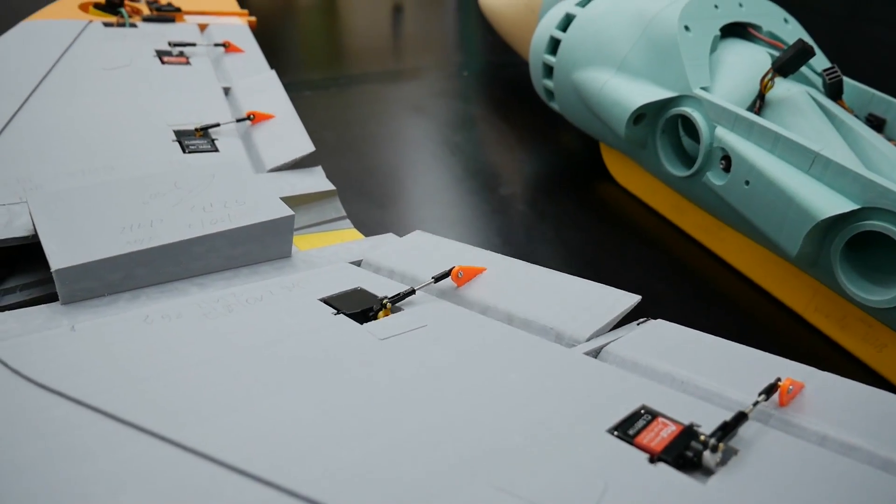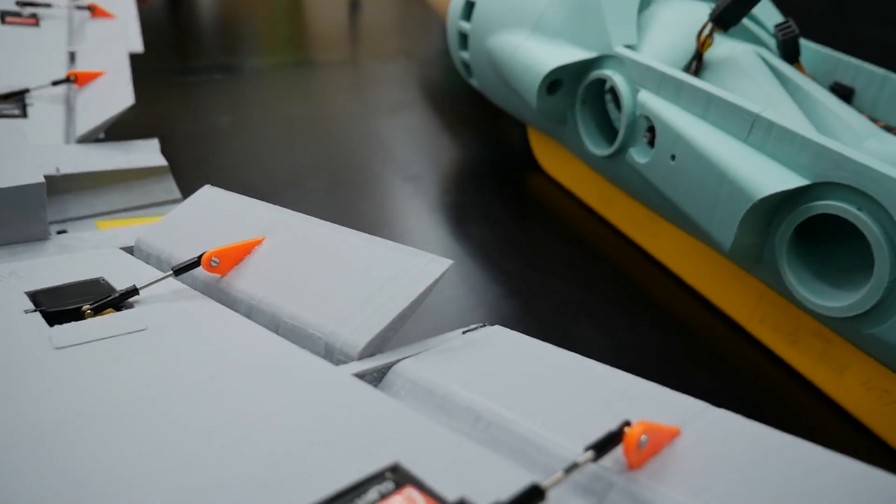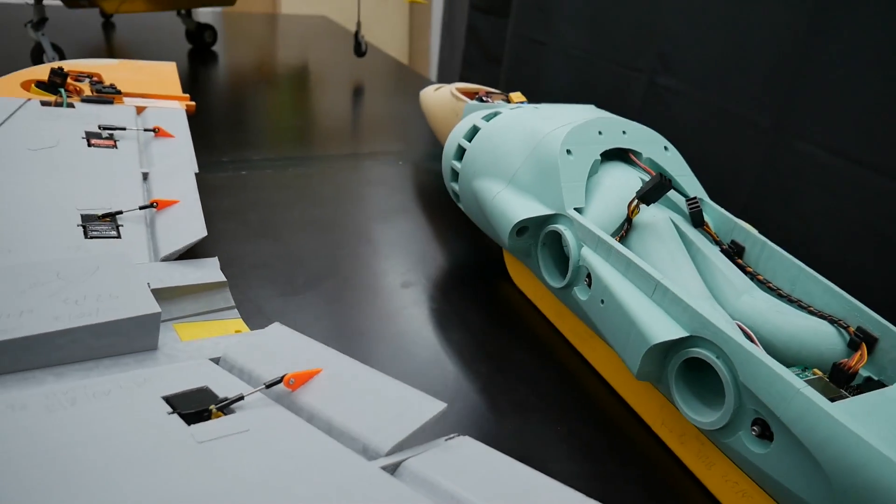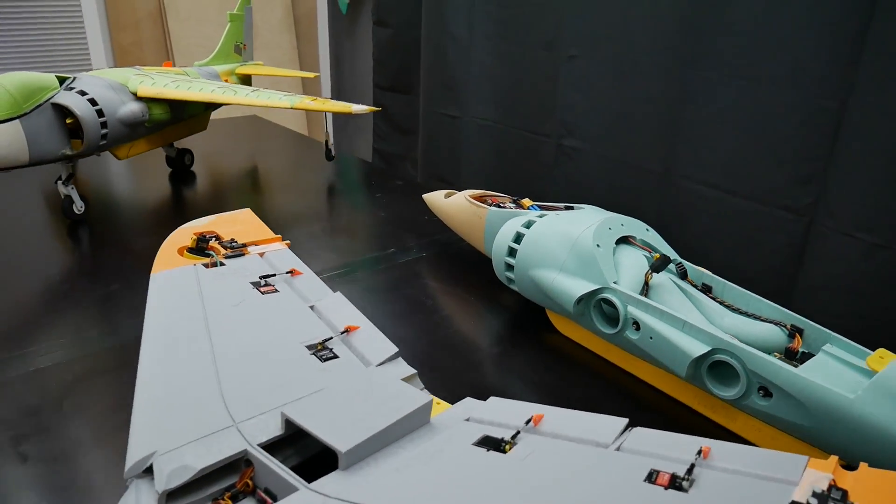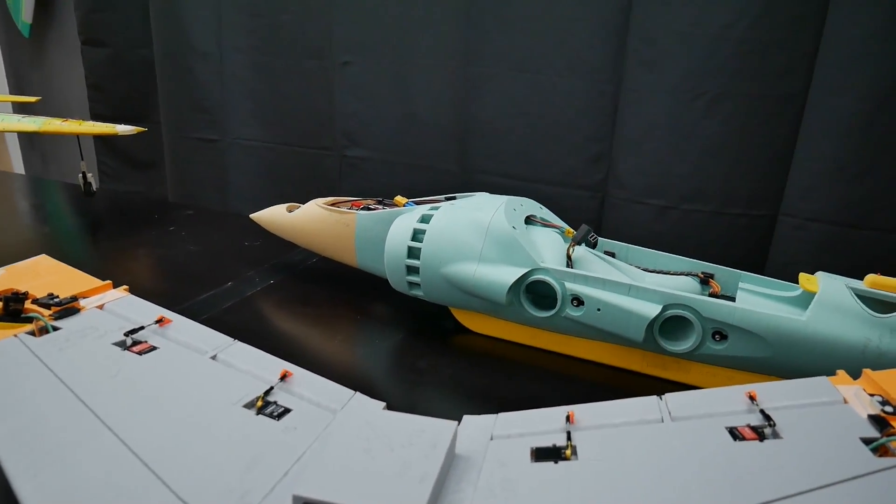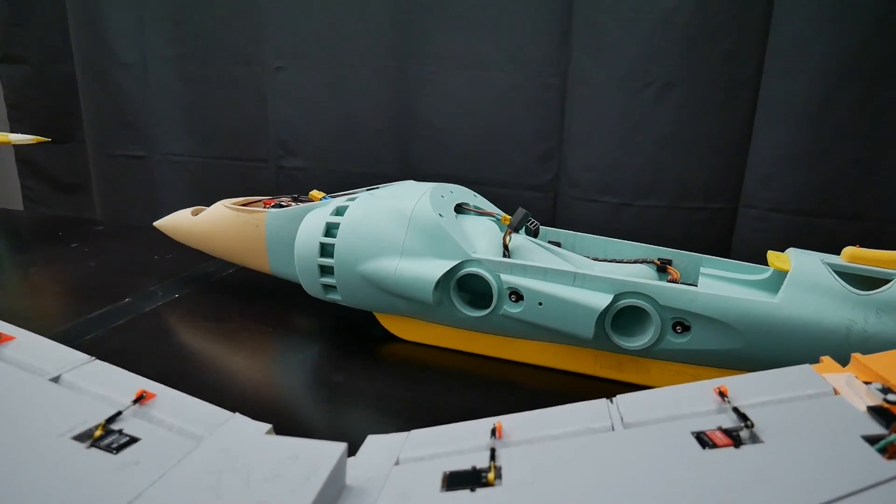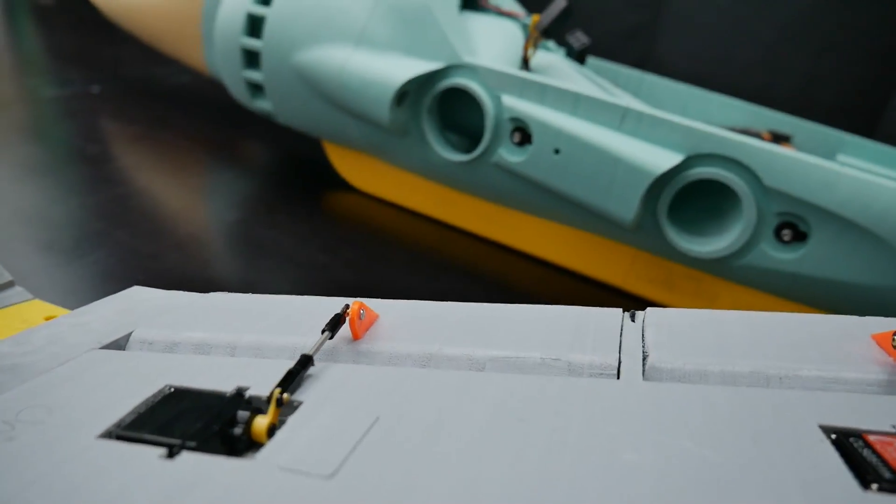On this VTOL Harrier we are activating for the first time the flaps. They will be coupled with the nozzles and generate much more lift and also help for steep landing approaches.